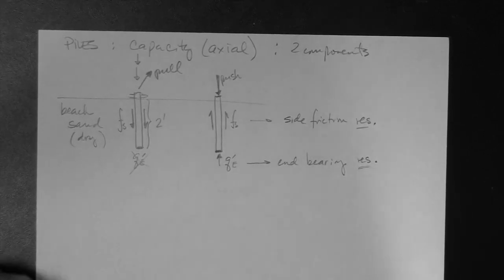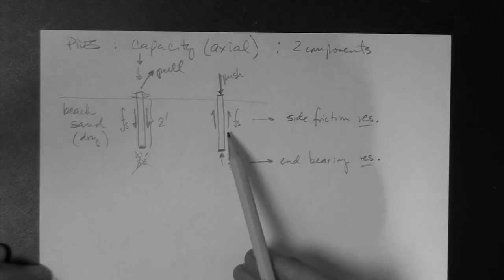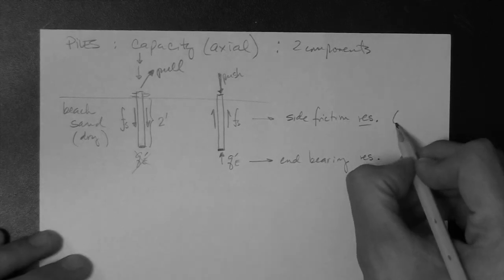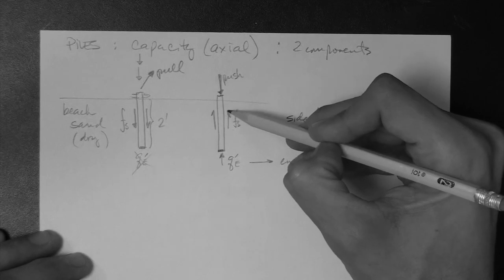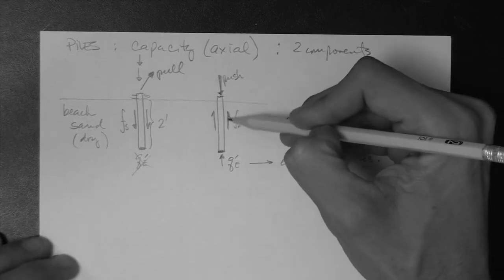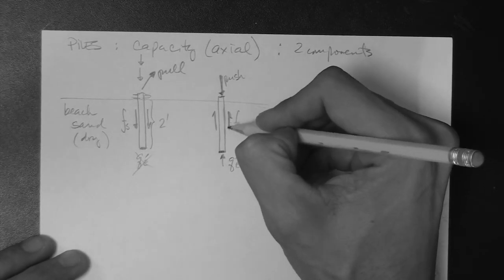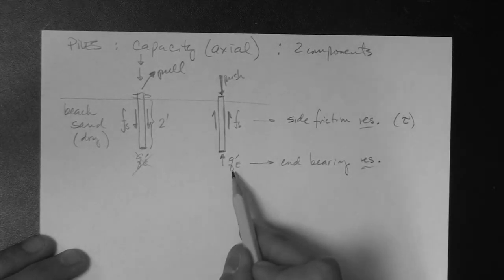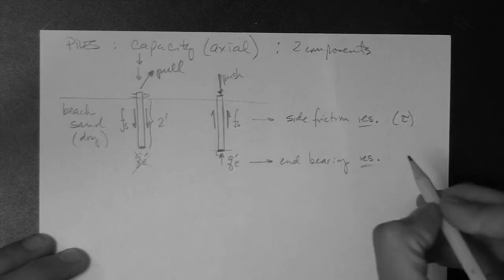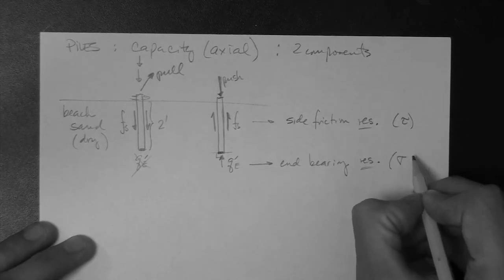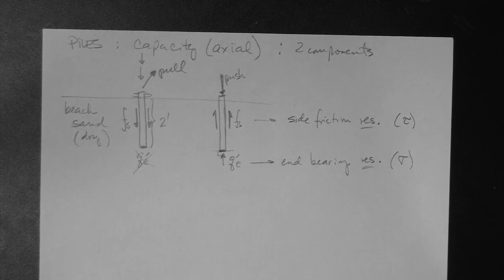If you think about it for a couple of seconds, you will realize that this one, Fs, is a tau. Why? Because it acts parallel to the plane on which it acts. This is the plane, and it acts parallel to it, so it is a tau. This one acts normal to the plane on which it acts, or normal. Therefore, it must be a normal stress, sigma. So, the Qe prime is a sigma, and the Fs is a tau.